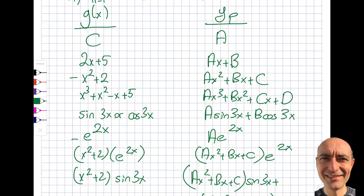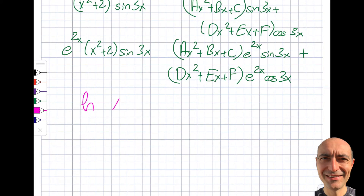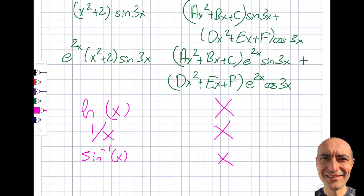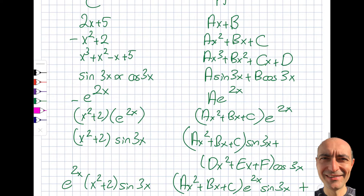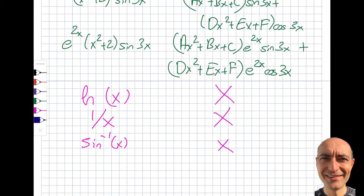That's a general guidance on what undetermined coefficients covers. As I mentioned at the beginning, this method is not applicable to everything. For example, if G of X is ln(x), this won't work. If G of X is 1/x, you cannot try 1/(Ax) — it won't work. Same for inverse trig functions like arcsin. For those cases I'll introduce another method in upcoming segments. Only apply undetermined coefficients to the valid function types.